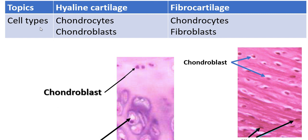The cell types of hyaline cartilage are chondrocytes and chondroblasts. The chondroblast is the immature cartilage cell. The chondrocyte is a bigger cell, and the white area within it is called the apparatus. Fibrocartilage contains chondrocytes and fibroblasts — the chondrocyte and the yellow-staining cell called the chondrofibroblast.